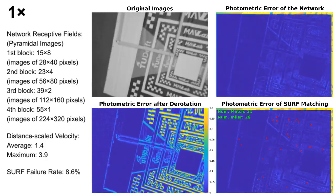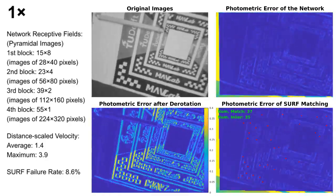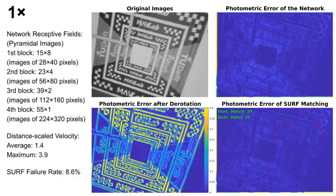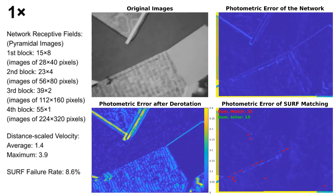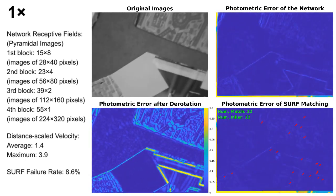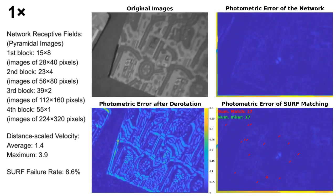The receptive fields are 120, 92, 78, and 55, which provide four-stage coarse to fine refinement.